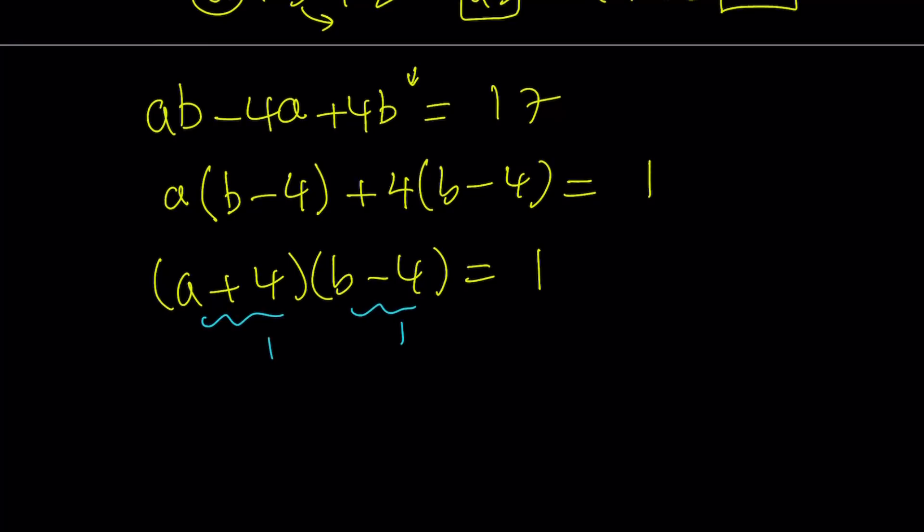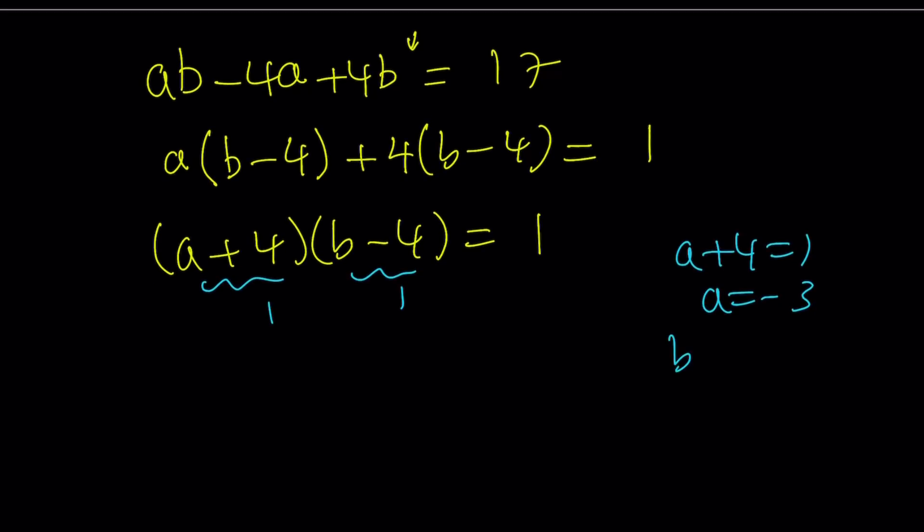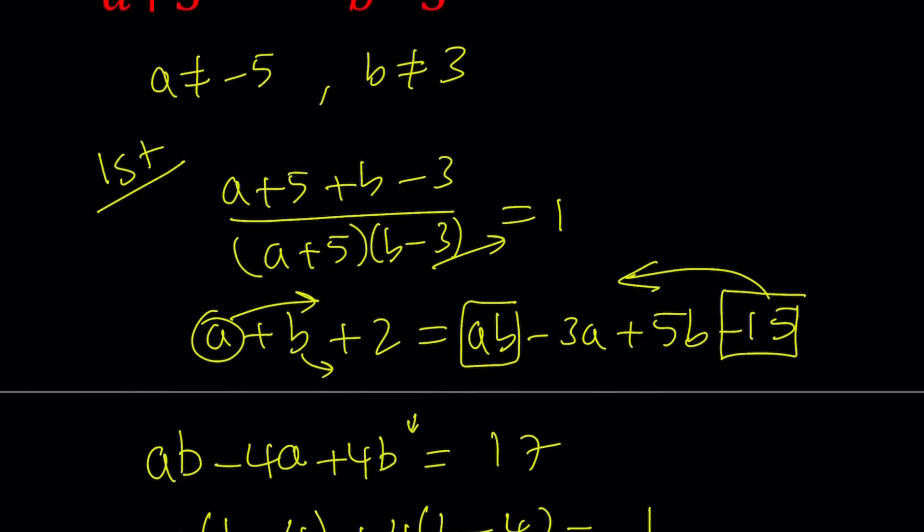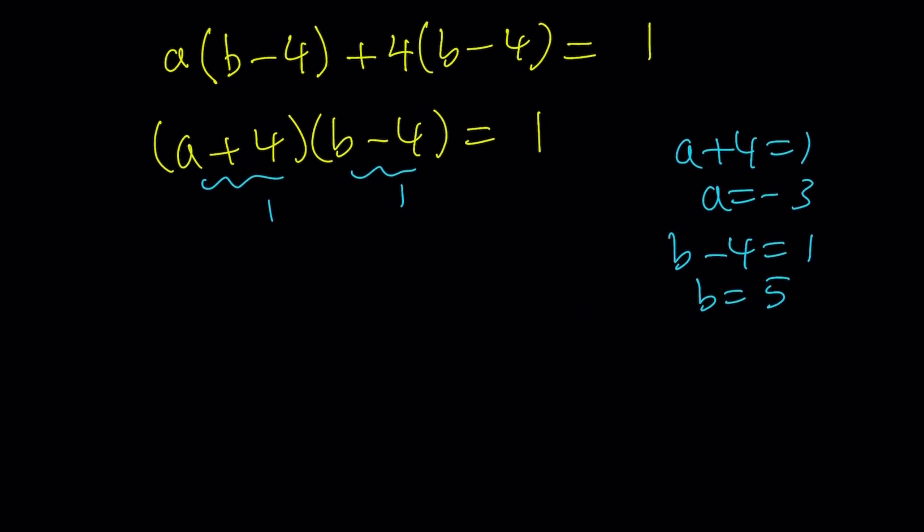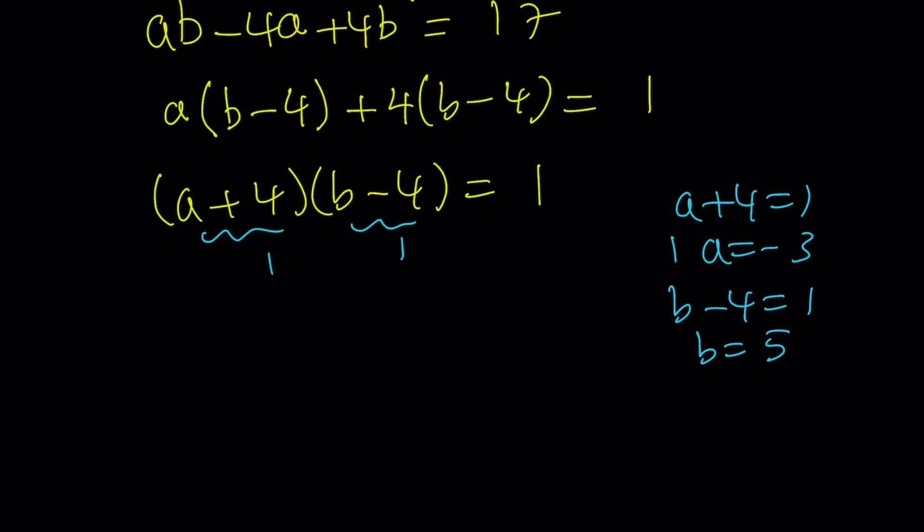So first case scenario, we're going to set both of these equal to 1. If a plus 4 is equal to 1, that means a is equal to negative 3. Now, one thing that we always need to check, these values against our restrictions. But let's go ahead and do the b as well. b minus 4 is equal to 1, and b is equal to 5. Now, initially, we said that a cannot be negative 5 and b cannot be 3. We're not violating that rule, are we? We're not. So we're good, and these solutions are valid.